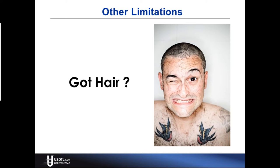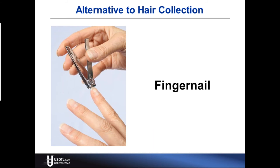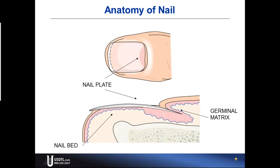An alternative is using fingernail. One of the nice things about fingernail is that it does not have pigment, so with the absence of pigment, we have removed one of the largest variables of hair testing. Looking at the anatomy of a nail: the nail forms in a place called the germinal matrix, where there's a lot of blood flow and drug is incorporated from the blood. You have skin surrounding the cuticle, and sweat and oil from that, as well as environmental exposure. So all three mechanisms familiar from hair testing are also present with the fingernail.